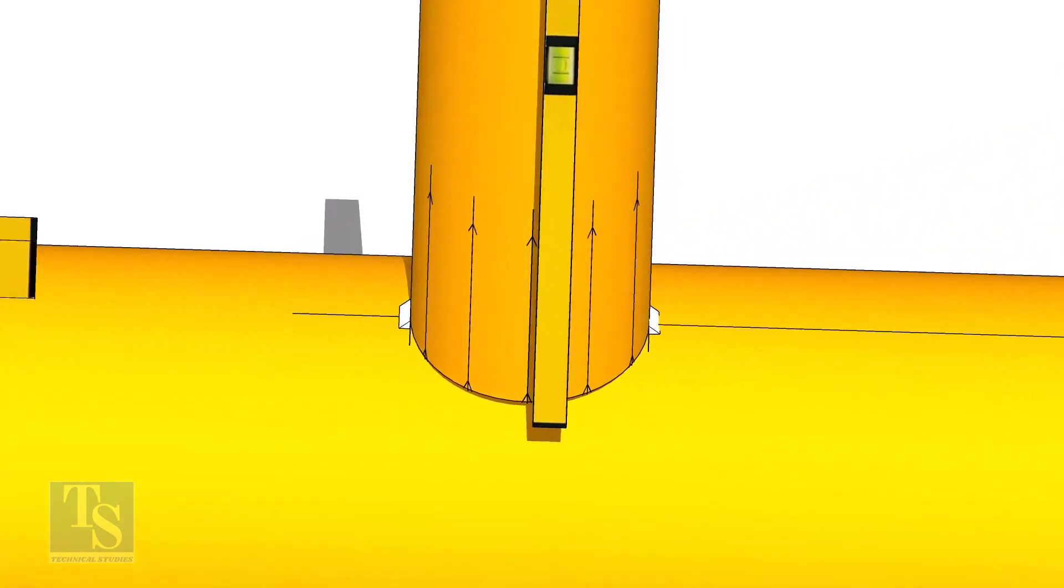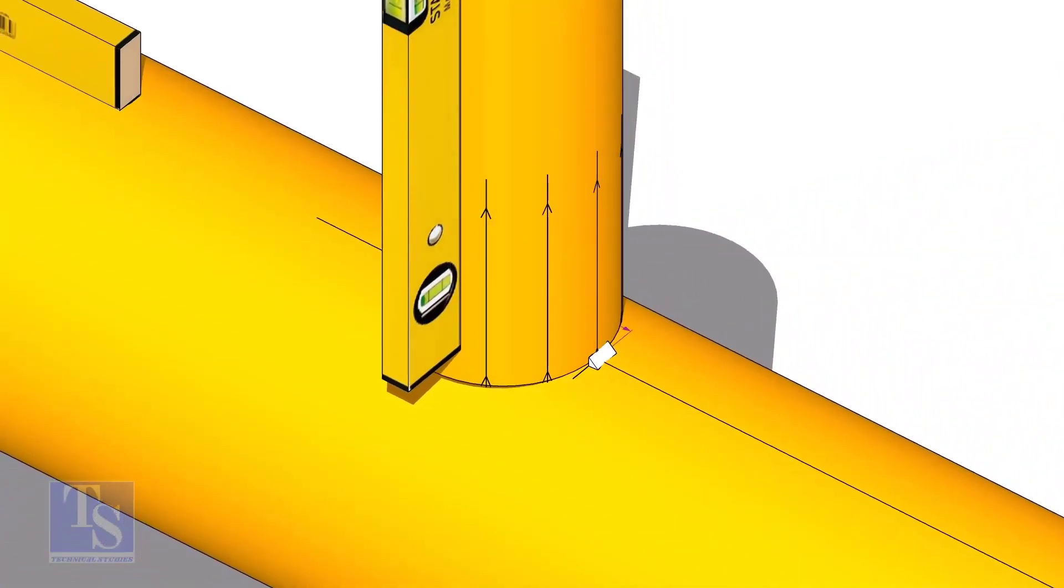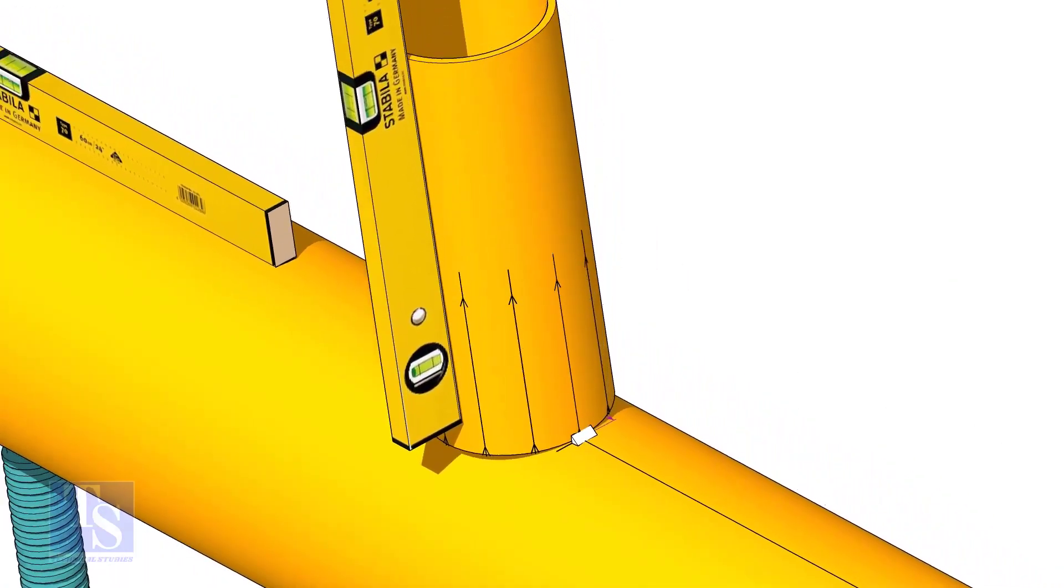Now make sure the pipe header and the branch are horizontally and vertically level. If required, strengthen the tack weld.